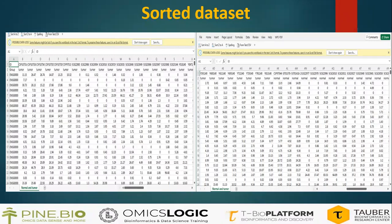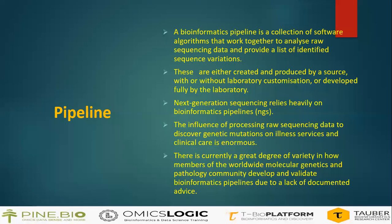In order to run the pipeline, we had to sort the dataset into tumor and normal samples, which we have done using the find and select function in Excel. All the tumor ones are on one side of the Excel sheet and all the normal ones are on the other side. A bioinformatics pipeline is a collection of software algorithms that work together to analyze raw sequencing data and provide a list of identified sequence variations. Next-generation sequencing relies heavily on bioinformatics pipelines, and the influence of processing raw sequencing data to discover genetic mutations on illness and clinical care is enormous.